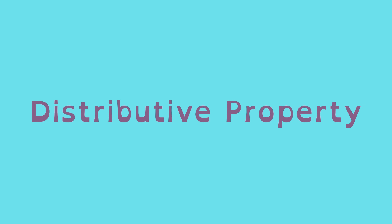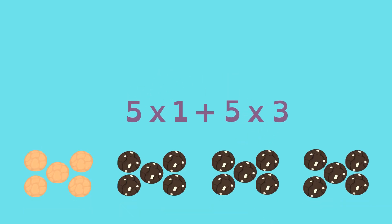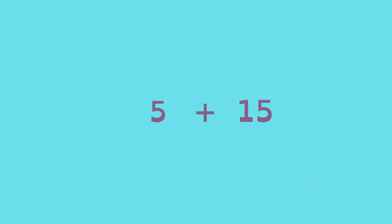Here's how the Distributive Property helps generate equivalent expressions. The 5 in this expression is distributed to the 1 and the 3, creating another expression. Look familiar? Multiply the numbers, and you get a third equivalent expression.